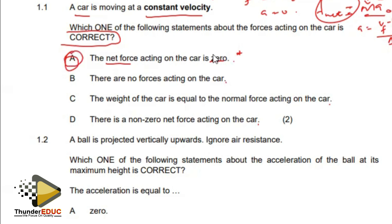So I already have the correct option. These ones - there are no forces, that's wrong. There's always a force that must push the car forward and there's always friction. The weight of the car is equal to the normal force acting on the car - this is true, but we're talking about a car that is moving. This is possible if the car is stationary. There is a non-zero net force - now this is wrong because we said the net force is zero. So option A would be the best suited.